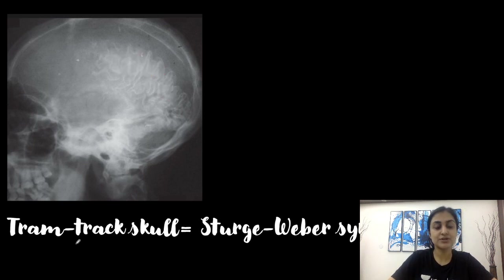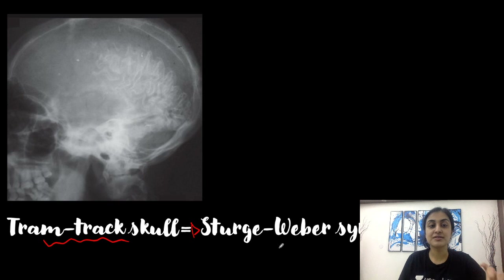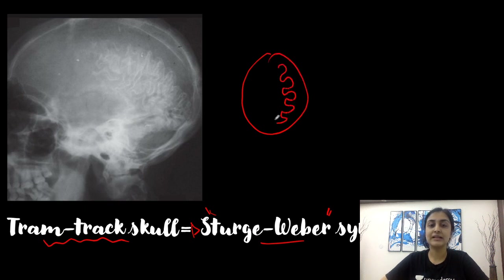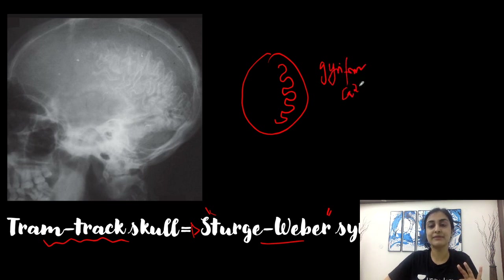In this next X-ray we see multifocal swirl-like gyriform calcification — looking like the gyri of the brain. This is the typical gyriform calcification likened to the tram-track appearance, giving the tram-track skull. This is typically associated with the neurocutaneous syndrome Sturge-Weber syndrome, where there is unilateral cerebral atrophy with gyriform calcification.